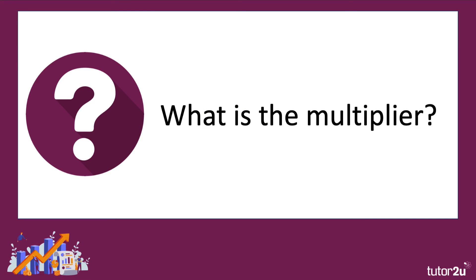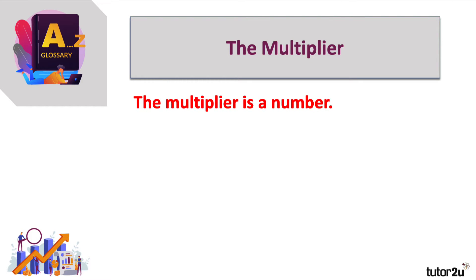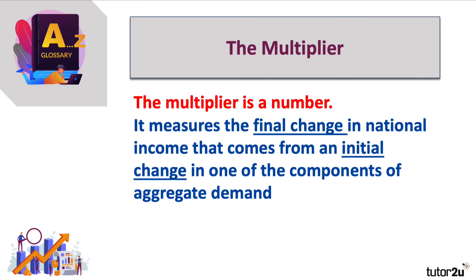What is the multiplier? Well, it's a number — a bit like elasticity. But it also describes a process by which one person's spending is somebody else's income, and money and income and output circulate around the circular flow. It measures the final change in national income that comes about from an initial change in one of the components of aggregate demand — it could be exports, investment, government spending, and so on.